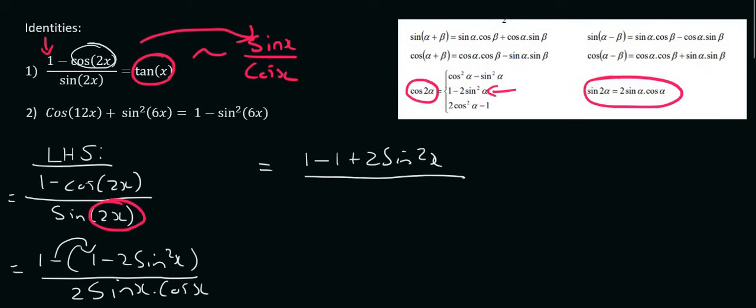At the bottom we're going to be left with two sinx times cosx. Notice the ones cancelled and so at the top we are left with two sin squared x and at the bottom we're left with two sinx cosx.